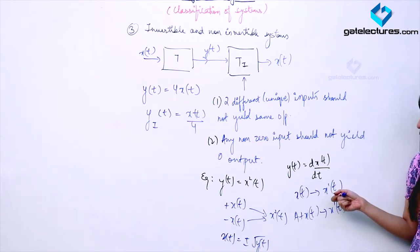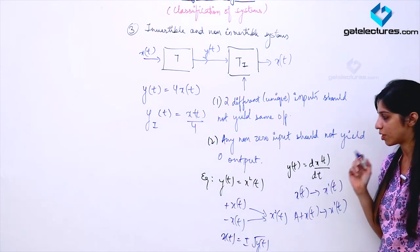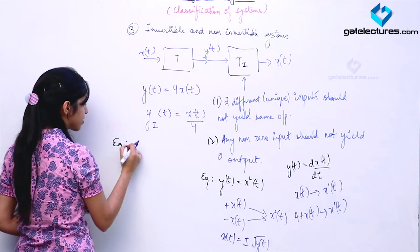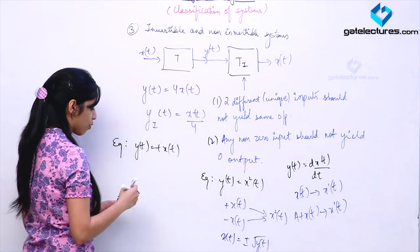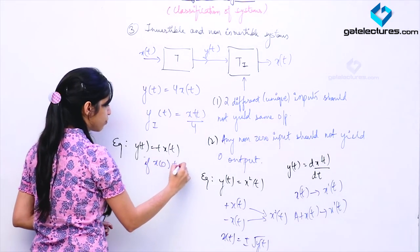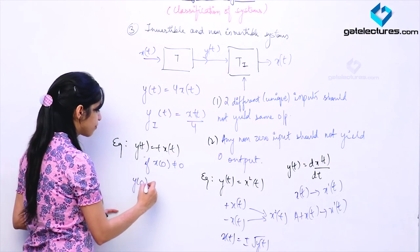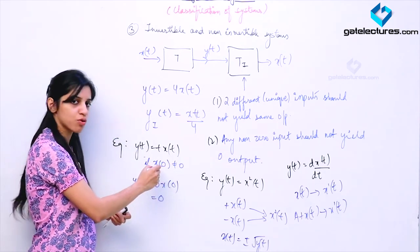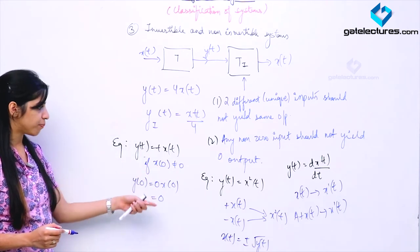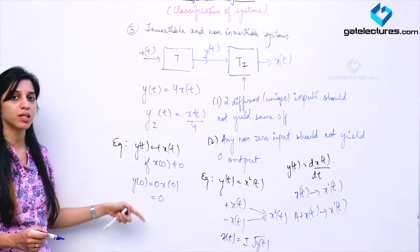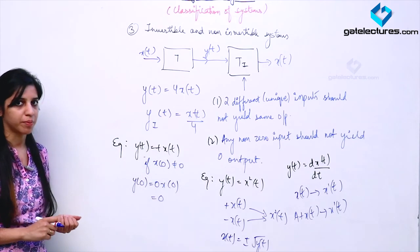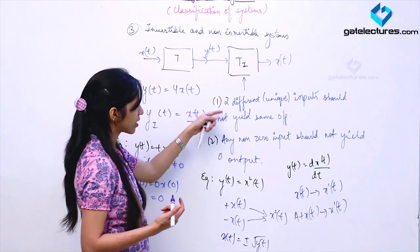Consider a differentiator with output d·X(T)/dT. This is also not an invertible system, because differentiation of X(T) gives X'(T) and differentiation of A plus X(T) also gives X'(T) — two different inputs yield the same output. That is why this system is non-invertible; it is a many-to-one mapping, which is not possible for an invertible function. Now look at the second condition: non-zero input should not yield zero output. Suppose you have a system Y(T) equals T·X(T). If X(0) is not equal to zero, Y(0) is going to be zero times X(0), which is zero — a non-zero input yielded a zero output. Therefore, obtaining the inverse of the system is not possible because some of the inputs have been lost during mapping. That is why these kinds of systems are not invertible.